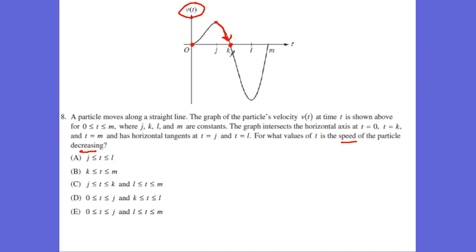Then my speed — remember, speed is a scalar quantity in terms of physics — it's going to be increasing in a negative direction, and then it gets to a negative velocity. Negative just means it is going in the negative direction. Then it goes back down to 0, which means our scalar speed is decreasing from L to M, which is answer C.